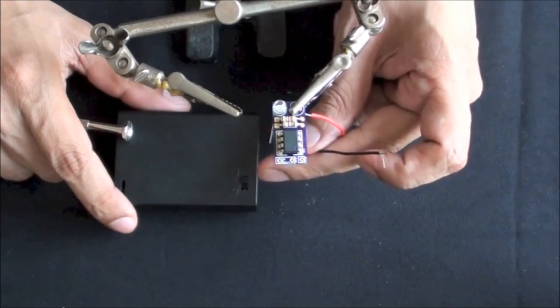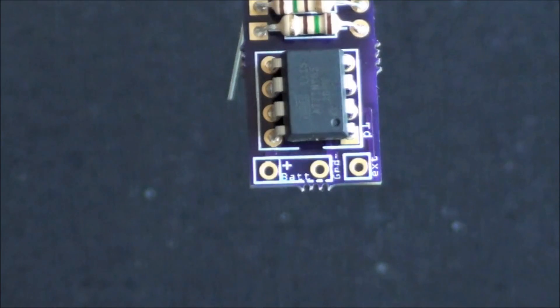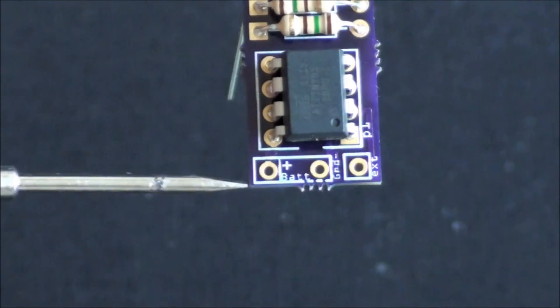To complete the kit, we will install the battery compartment to the PCB. The battery compartment has one black and one red wire. Remember, red is positive and black is negative.